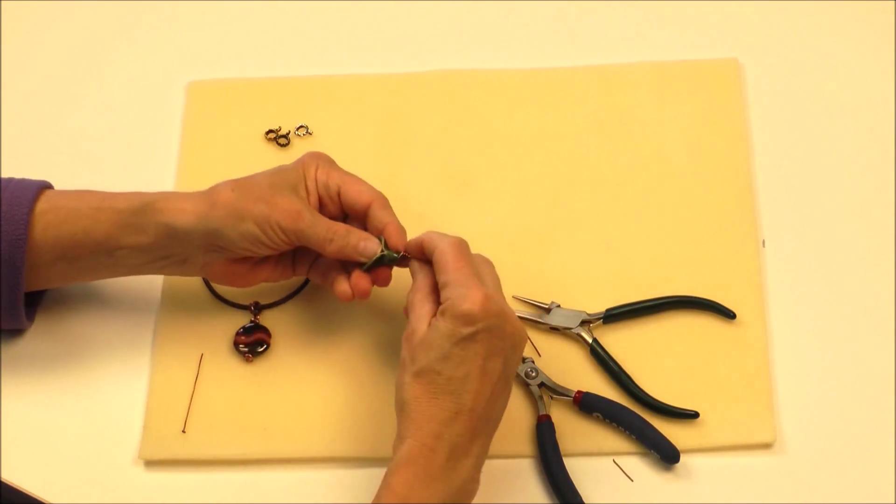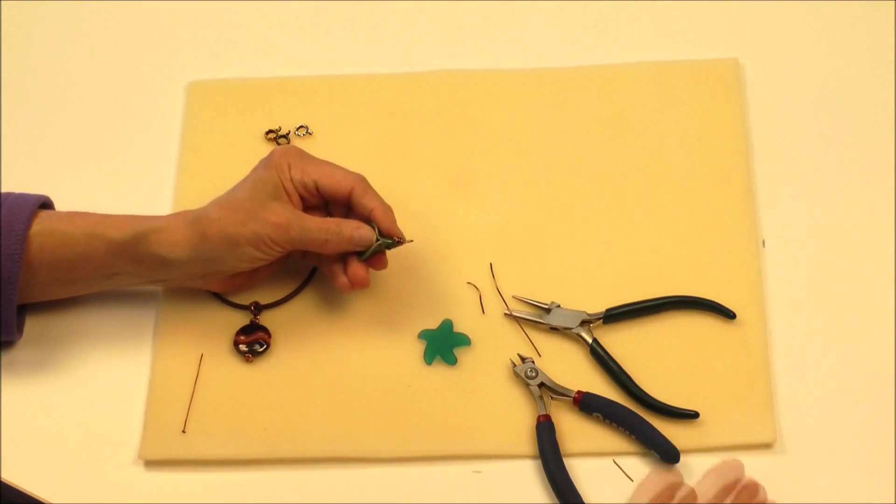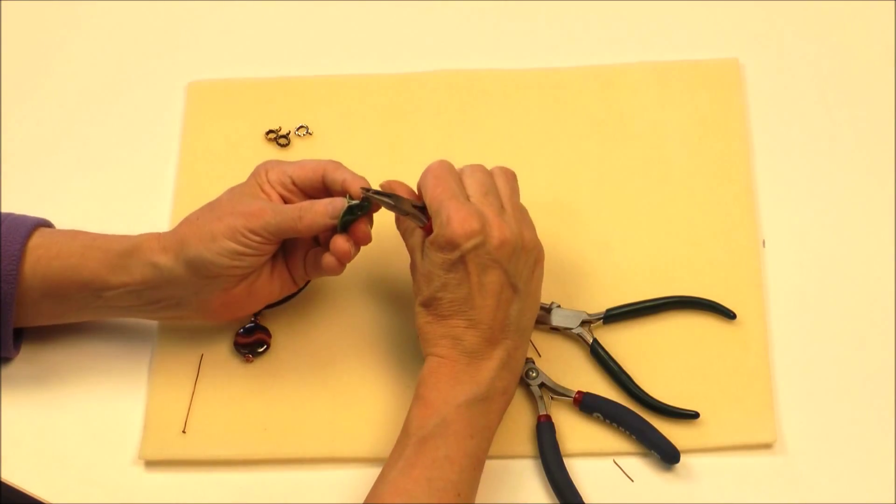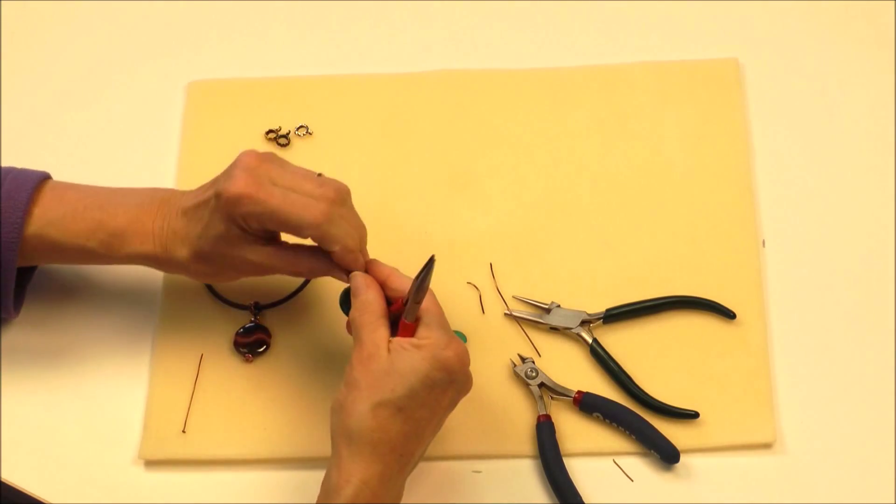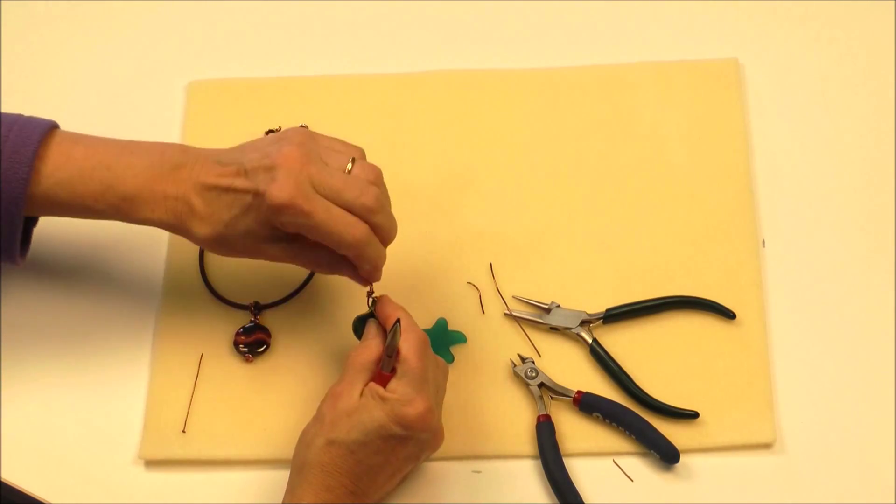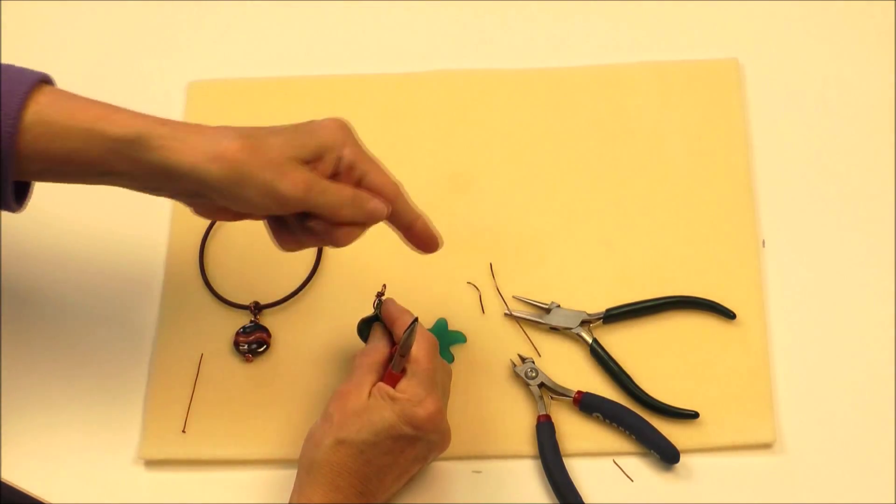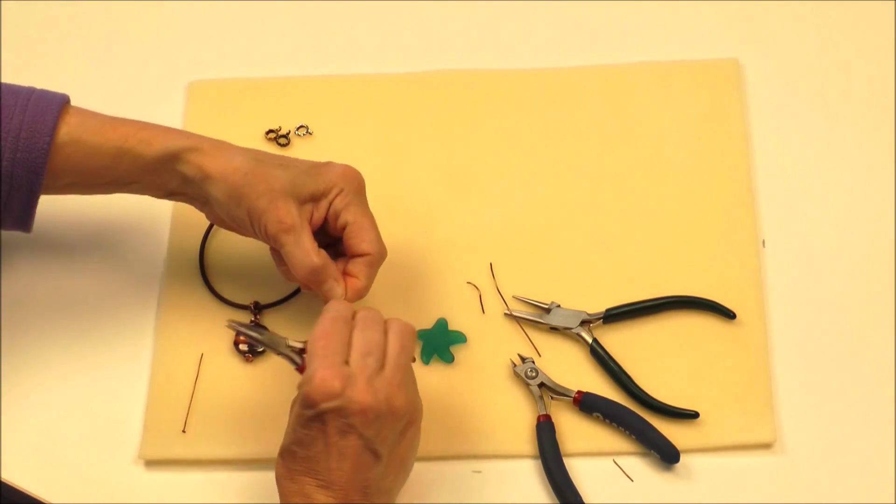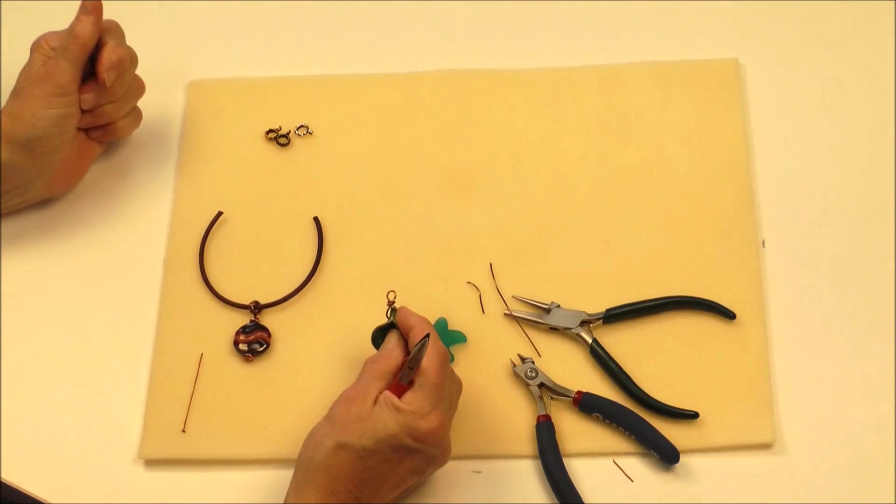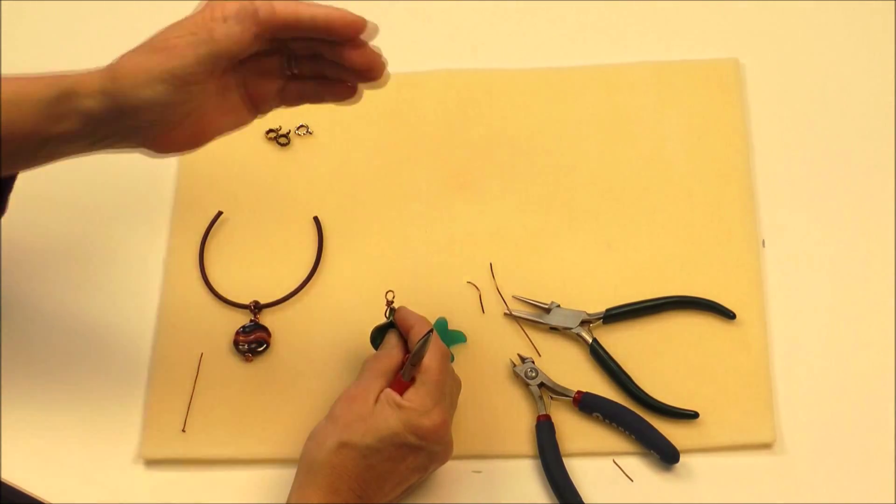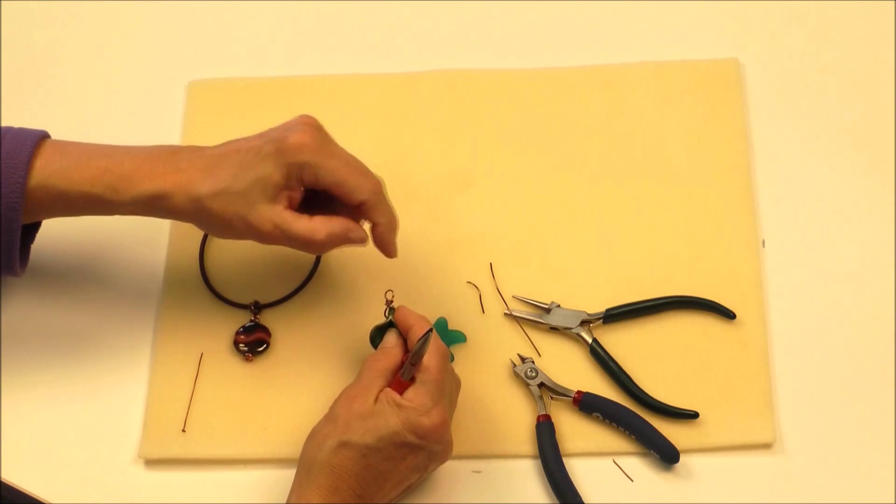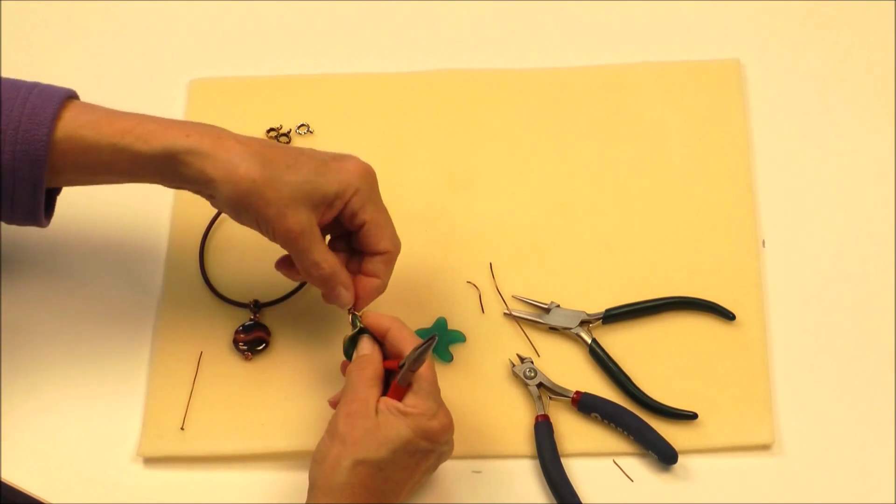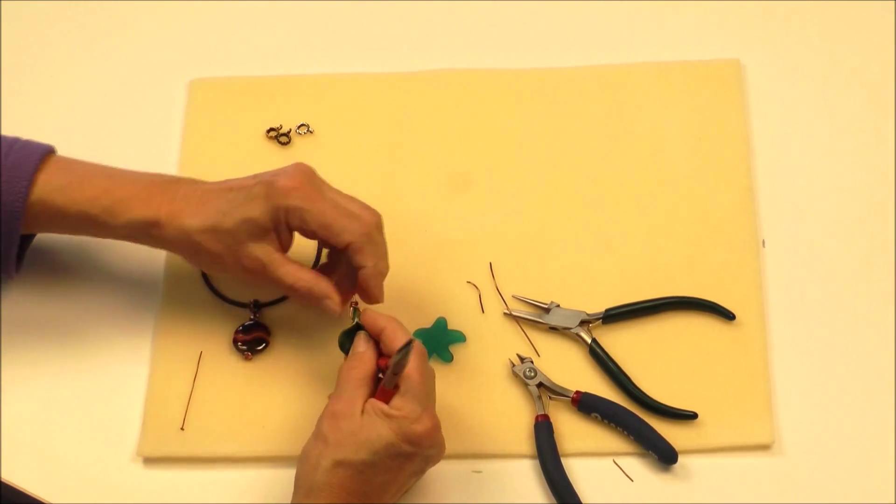My last two steps, one is to make sure that my bail is pointing front to back in this case so I can run a cord through it. If I wanted a pair of earrings, I'd actually put that loop facing forward so that I can attach my ear wire. But I do want a pendant so I'll go ahead and reorient that.